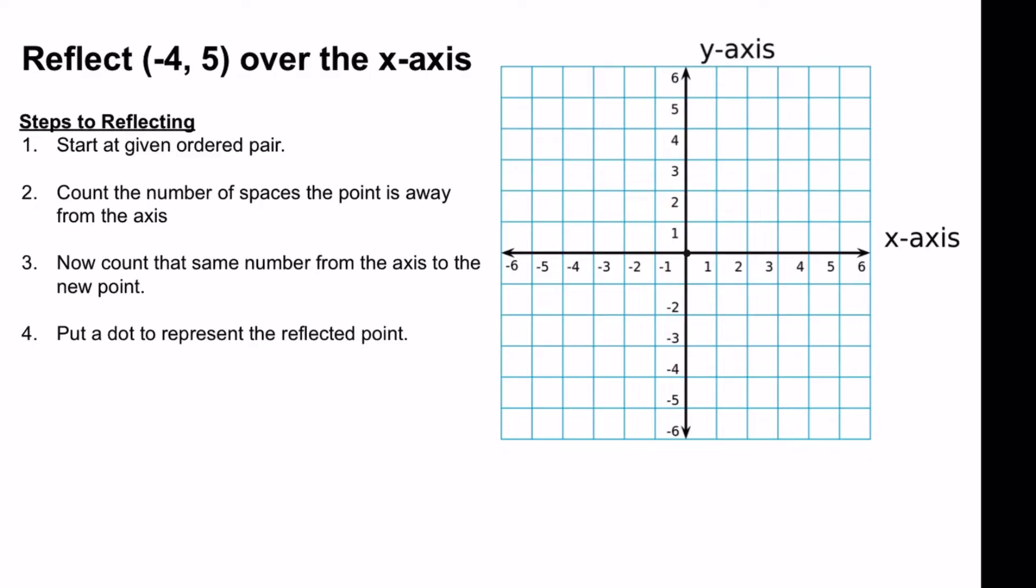We want to count the number of spaces the point is away from the x-axis. So our given point is at negative 4 and 5. So I'm going to plot that point first.